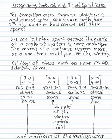First is the sunburst source because the trace is positive, the eigenvalues are 2 and 2. The second is the sunburst sink because the eigenvalues are negative, minus 3 and minus 3.